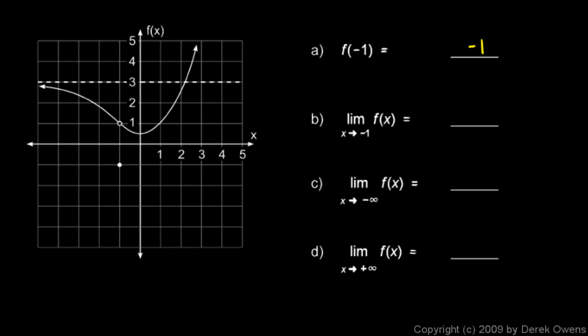The limit as x approaches negative 1 of f(x). Well, as x gets close to negative 1 from either side, you can imagine moving along the curve toward that point. And in that case, we're getting close to a value, a y value of 1. So the limit as x approaches negative 1 of f(x) is positive 1.